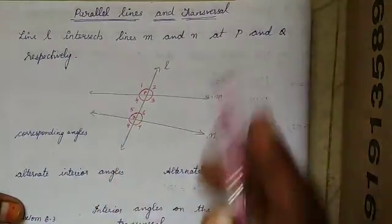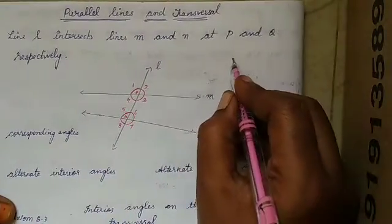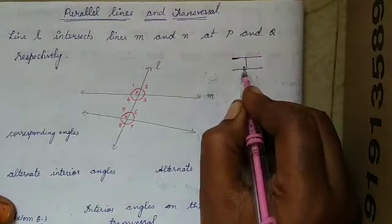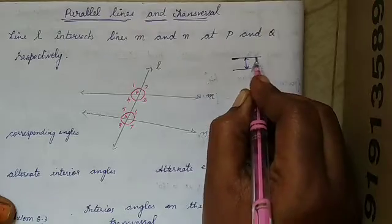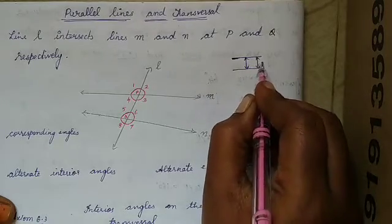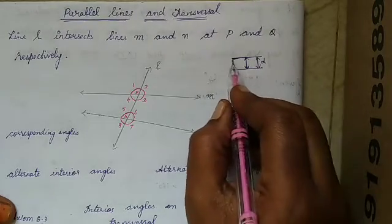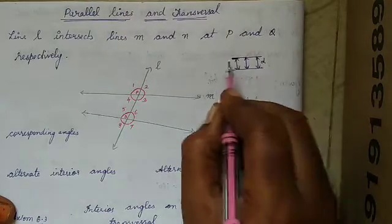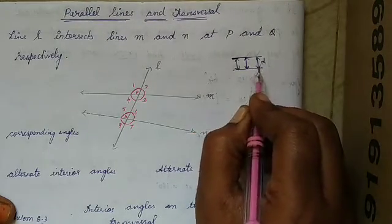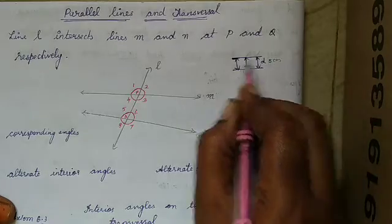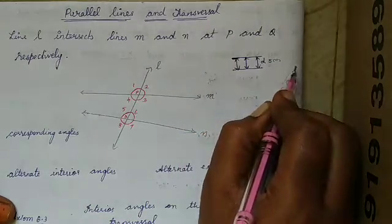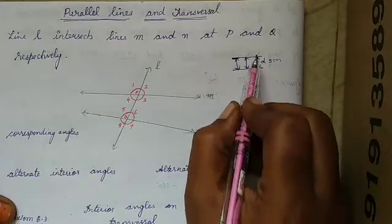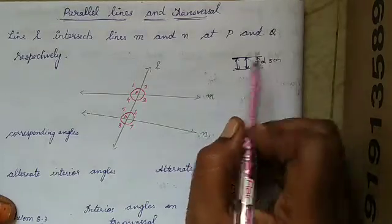Parallel lines means these two lines are said to be parallel if the distance between these two lines is the same everywhere. Suppose if the distance is 5 cm, then throughout the entire line it should be 5 cm only. Then those lines are said to be parallel lines.